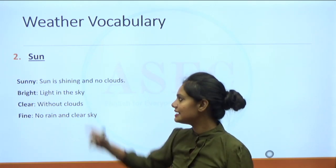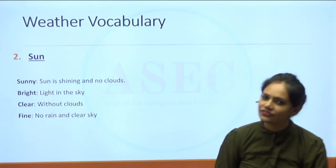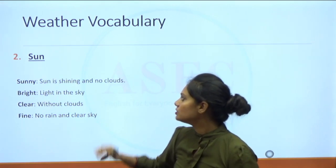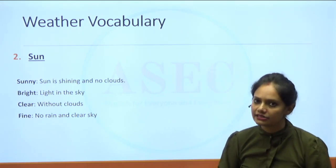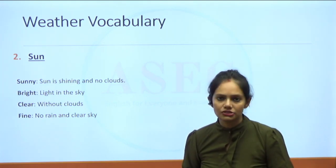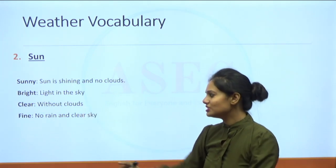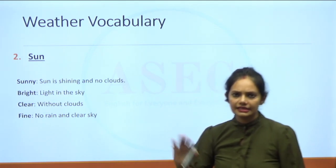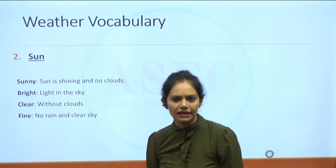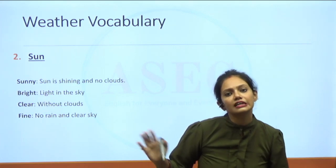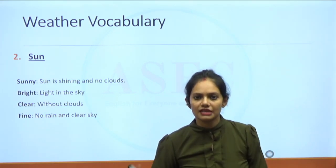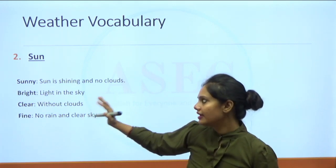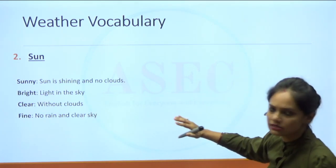Words related to the sun: Sunny means the sun is shining, it's a very bright day with no clouds. Bright means there is a lot of light in the sky — 'It's a bright day, let's play cricket.' Clear and fine are used interchangeably and mean more or less the same: clear is without clouds, and fine means no rain with sunshine. Cricket commentators often say 'it's a very clear and fine day,' meaning the weather is nice and play won't be interrupted.